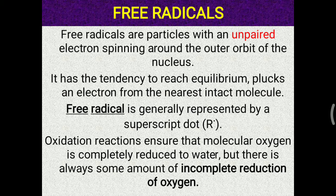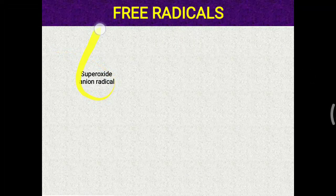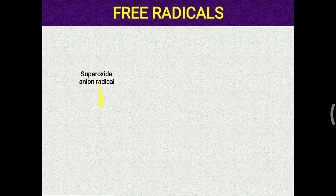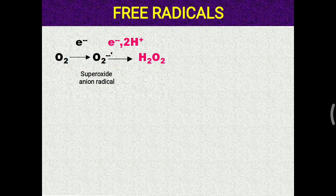Oxidation reactions ensure molecular oxygen is completely reduced to water, but there is always some amount of incomplete reduction of oxygen, and that is one of the biggest reasons for free radical generation in our body. Superoxide anion radical is mostly generated from oxygen when an electron attaches to it, making the superoxide anion.